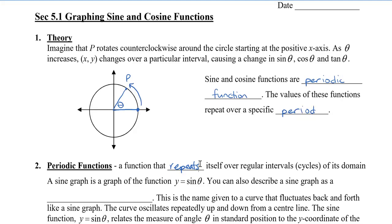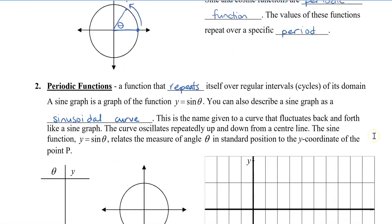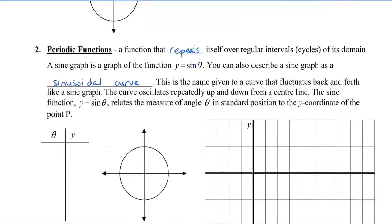A sine graph is a graph of the function y equals sine theta. You can also describe a sine graph as a sinusoidal curve — this is the name given to a curve that fluctuates back and forth like a sine graph. The curve oscillates repeatedly up and down from a center line. The sine function, y equals sine theta, relates the measure of angle theta in standard position to the y-coordinate of point P.